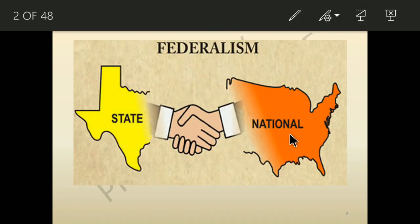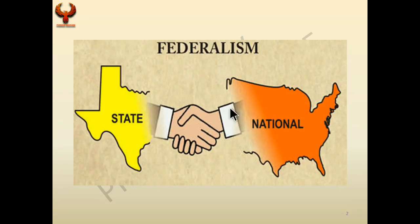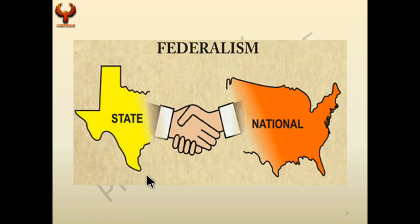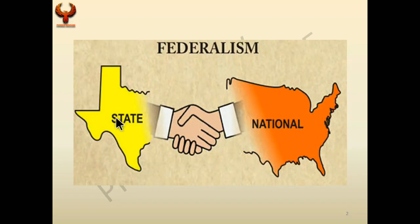Let us begin with this chapter. We can see how state government and national government are coming together and working for the development of the country — this is cooperative federalism. The central government, which is more powerful compared to state government, should allow the state government to work properly. If both levels of government work independently and properly, it will ultimately lead to the development of the country.